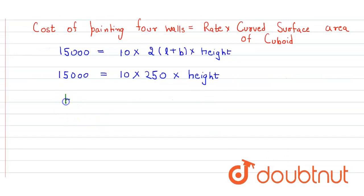Height equals 15,000 divided by 2,500. These cancel out, and when we divide it gives 6. So the height of the room will be 6 meters.